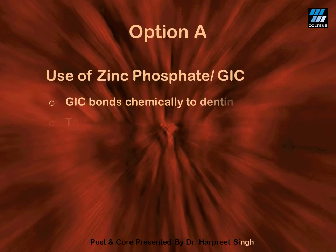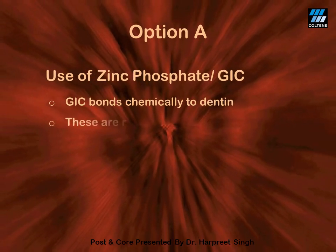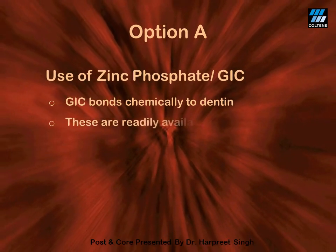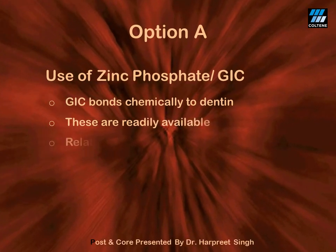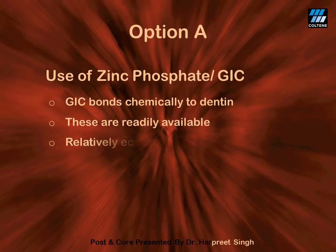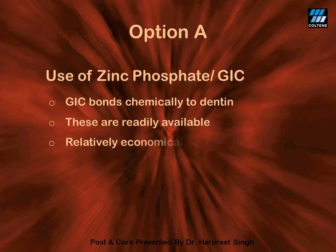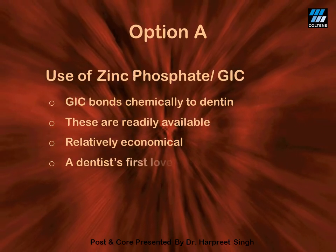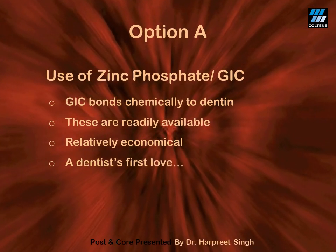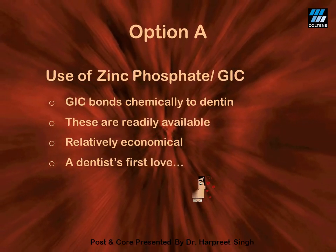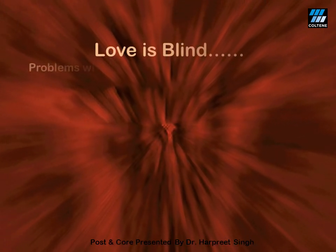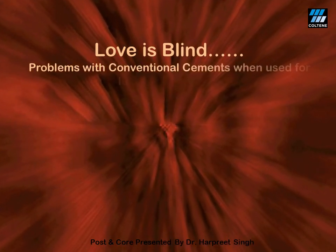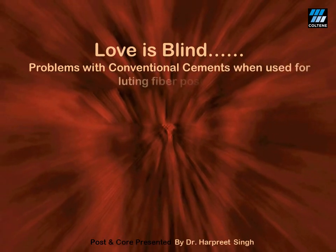Option A is the use of GIC or zinc phosphate, because they are always available in our clinics and we know that GIC bonds chemically to dentine. Since we have been using these materials since we started dental practice, they are like our first love. But we all know that love is blind, and one must understand the drawbacks of these conventional cements.